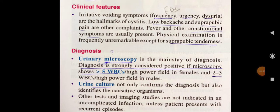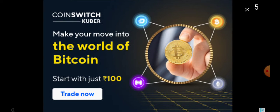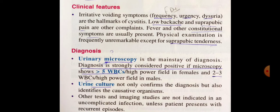Clinical features: Irritative voiding symptoms include frequency, urgency, and dysuria. These — frequency, urgency, and dysuria — are the hallmark of cystitis, often abbreviated as FADU.